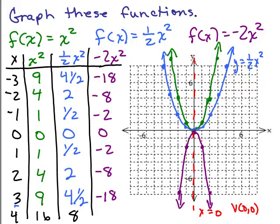This is a steeper parabola because of the coefficient of negative 2, and because it's negative it goes down. So we're seeing what happens with f of x equals ax squared using different values of a. With a equals 1 it's our normal parabola, with a equals one half it's still going up but it's wider. For y equals negative 2x squared it's steeper — the absolute value of negative 2 is 2, so it's twice as big as 1 — and it's upside down.